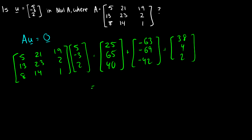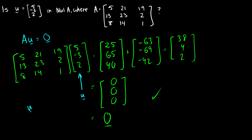Our result is: 25 + 38 - 63 = 0; 65 + 4 - 69 = 0; 40 + 2 - 42 = 0. Therefore we have the zero vector. Because A times u produces the zero vector, u is in the null space of A.